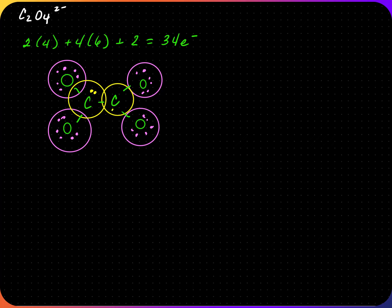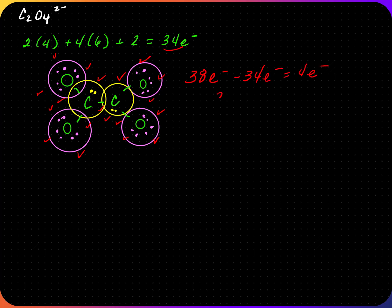Starting with single bonds, we fulfill the octet rule. All oxygens start with a single bond and each needs six more electrons or three lone pairs. Each carbon has six bonded electrons from three bonds, so it needs two more. Counting all electrons gives thirty-eight. The valence electron total is thirty-four, so this structure is incorrect. Thirty-eight minus thirty-four equals four extra electrons, meaning there are two extra bonds.